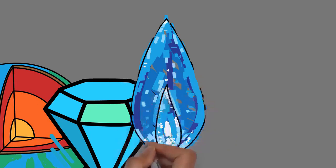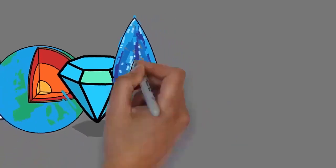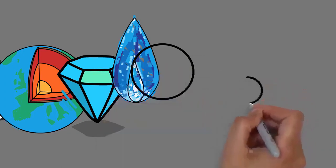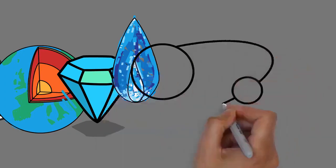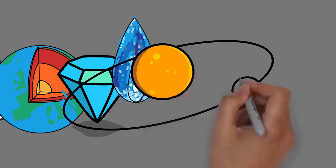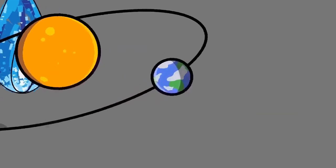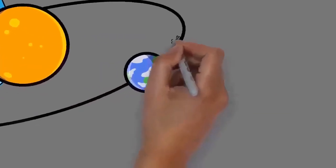Earth rotates around its own axis in slightly less than a day, in about 23 hours and 56 minutes. Earth's axis of rotation is tilted with respect to the perpendicular to its orbital plane around the sun, producing seasons.